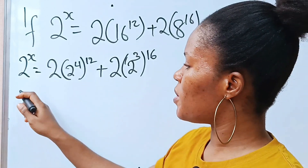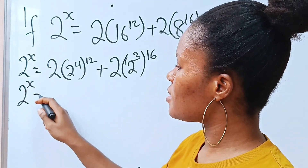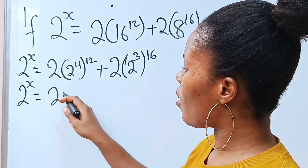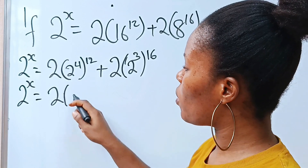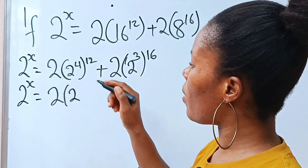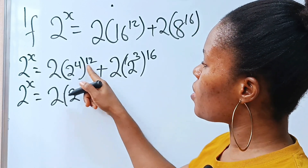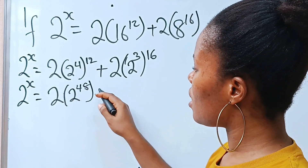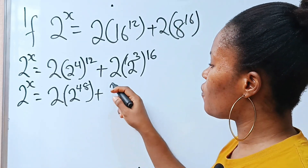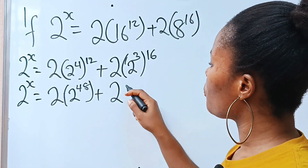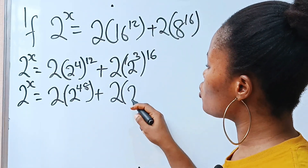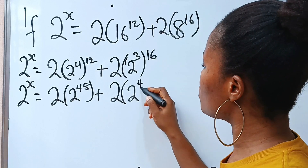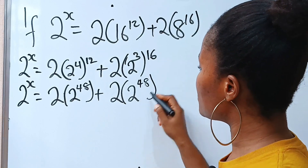So this means that 2 to the power of x is equal to 2 raised to the power of 4 times 12, which gives us 48. Similarly, 2 to the power of 3 times 16 is also 48.